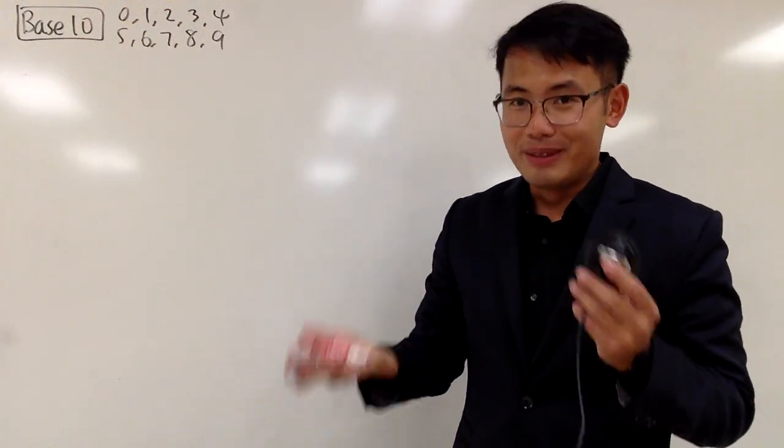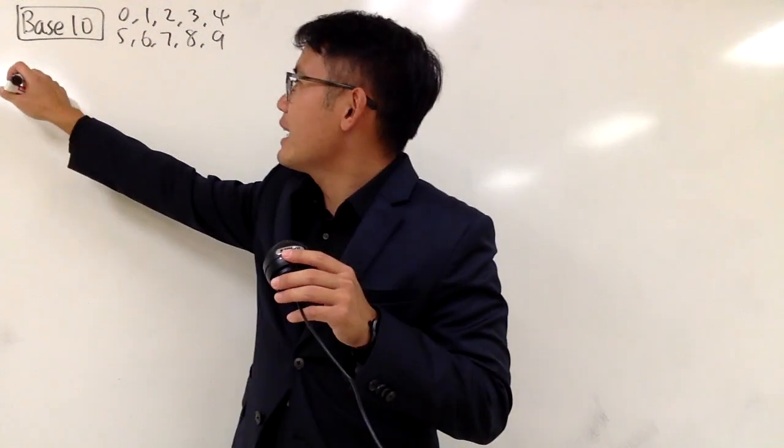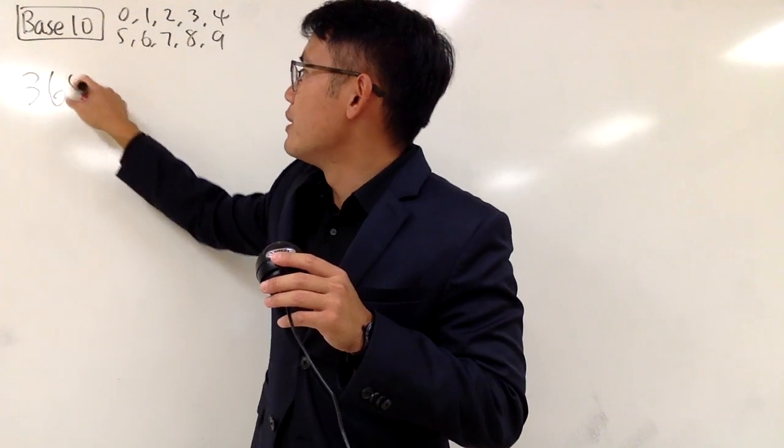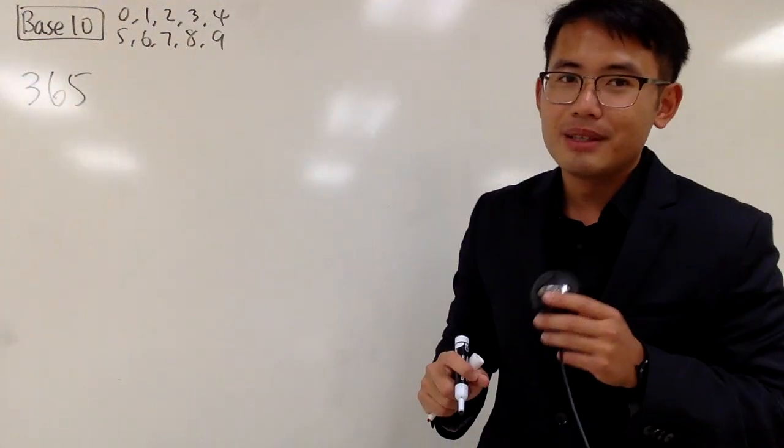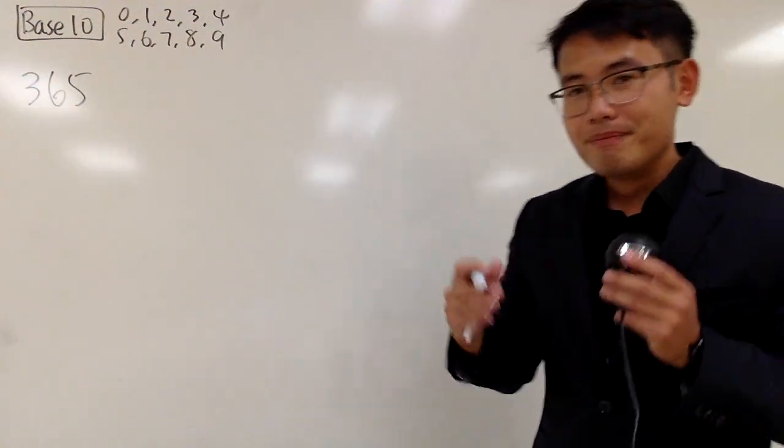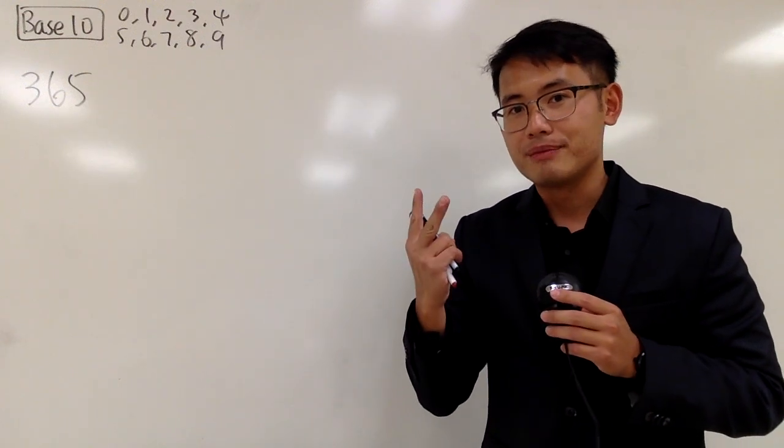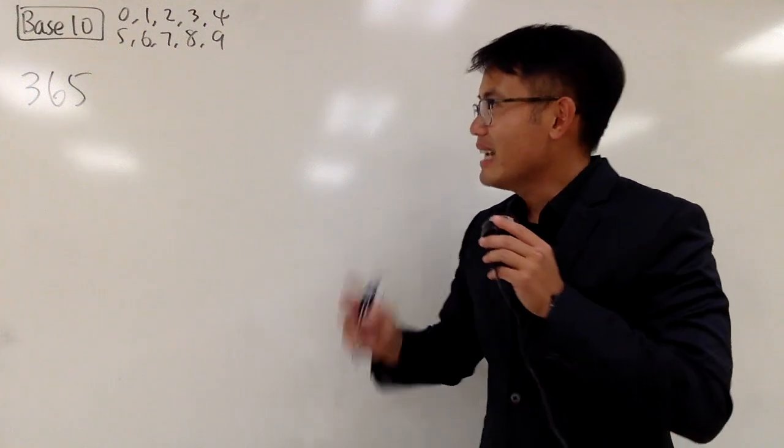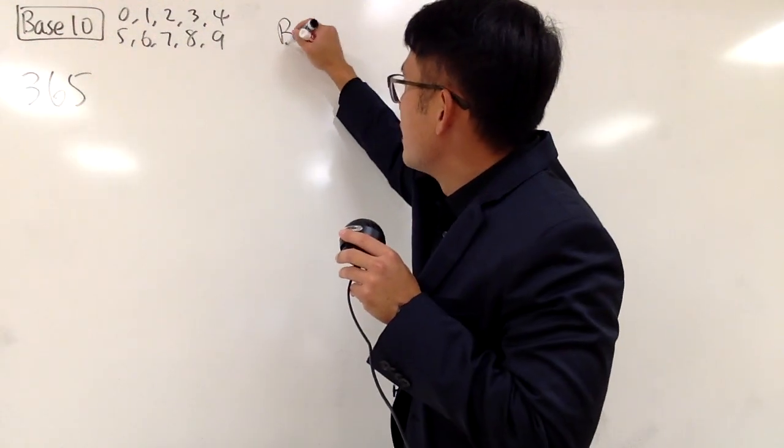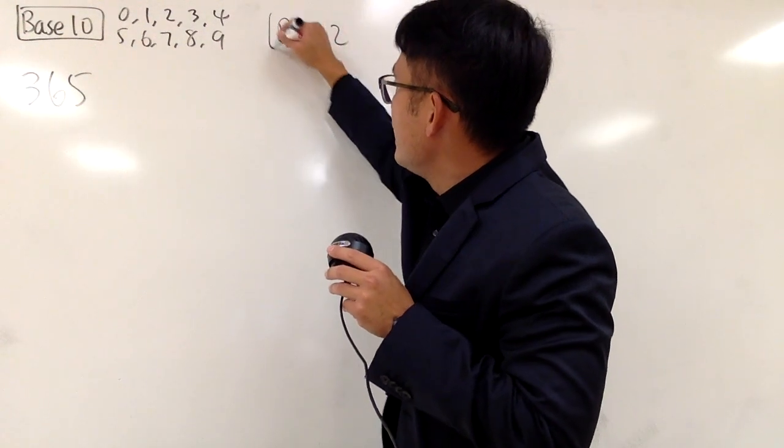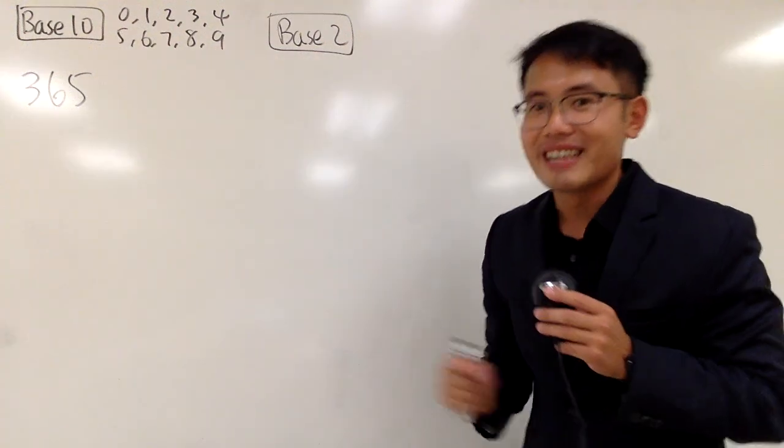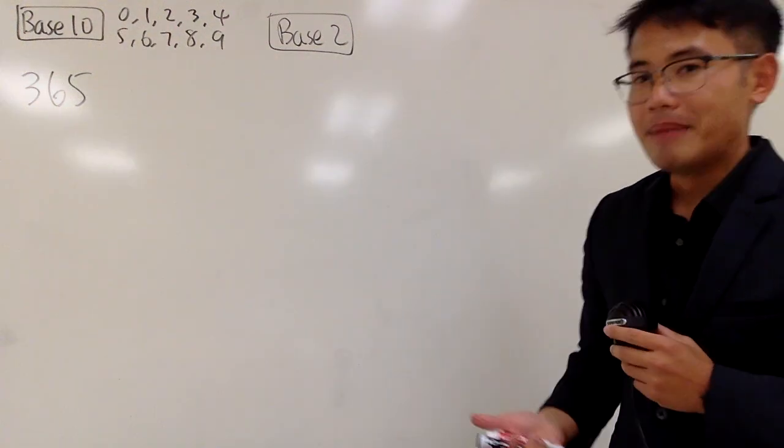And let me just write out a number for you guys with these digits. I can write down a number such as 365. But now, what if I don't have all 10 digits? What happens if I only have, let's say, 2 digits? That's the concept of what we call base 2. And in fact, you do this in computer science. But let's just go over the math right here.